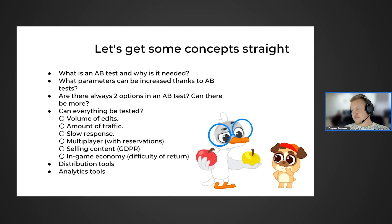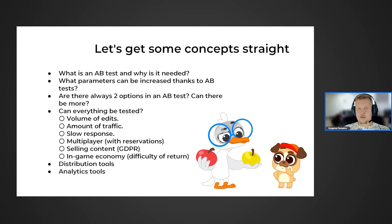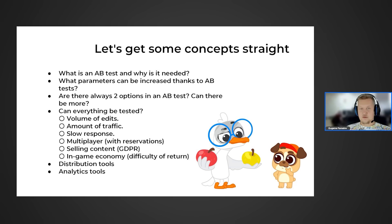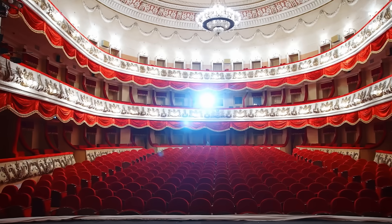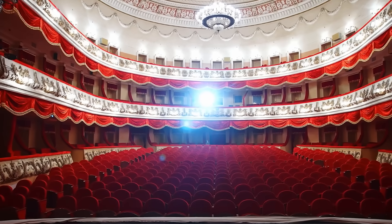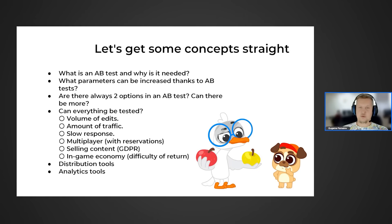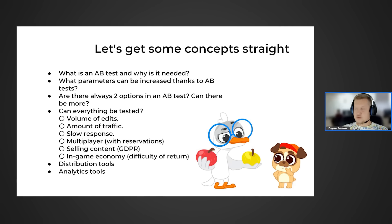Multiplayer — with reservations. In multiplayer, it's important for users to have the same playing conditions. If your A-B testing gives some users an ability to win while others don't have access to that feature, people will be very upset and you'll lose your audience. You can do A-B testing with multiplayer on a separate server — assign a dedicated server for the B group cohort where people play under equal conditions.